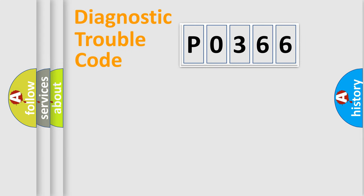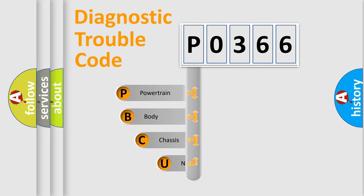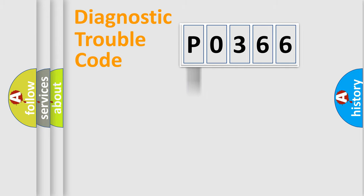Let's do this. First, let's look at the history of diagnostic fault code composition according to the OBD2 protocol, which is unified for all automakers since 2000. We divide the electrical system of the automobile into four basic units: Powertrain, Body, Chassis, and Network.